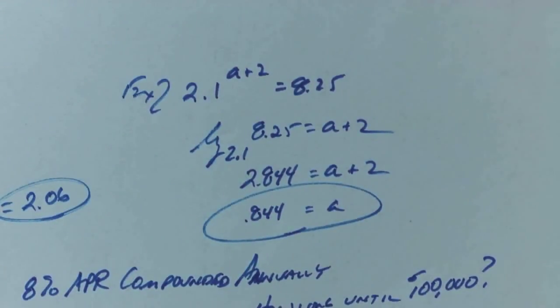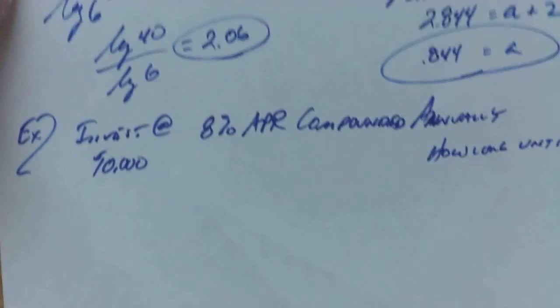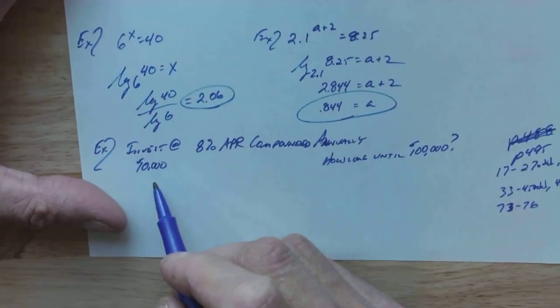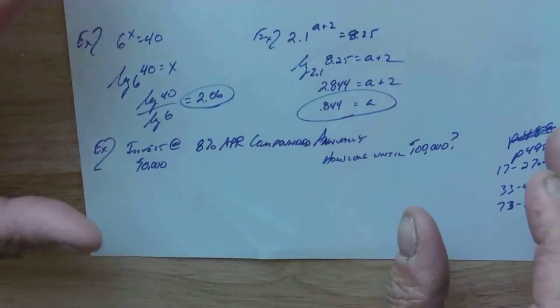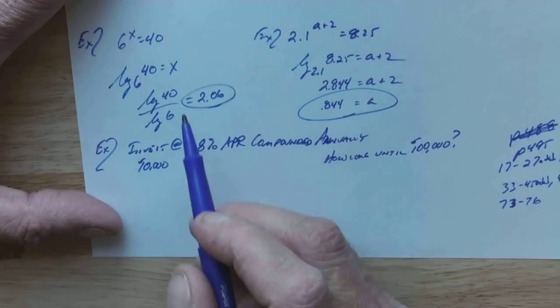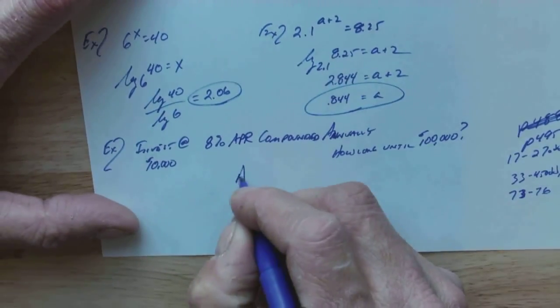And right now, and rightfully so, you're probably going, wait a minute. So, what is this useful for? Well, let's ground this in a couple things. Let's ground it in investing like we just got done with not too long ago. Say I'm going to invest $10,000 at 8% APR compounded annually. We're not going to mess with monthly or weekly or anything like that. How long until it gets up to $100,000?